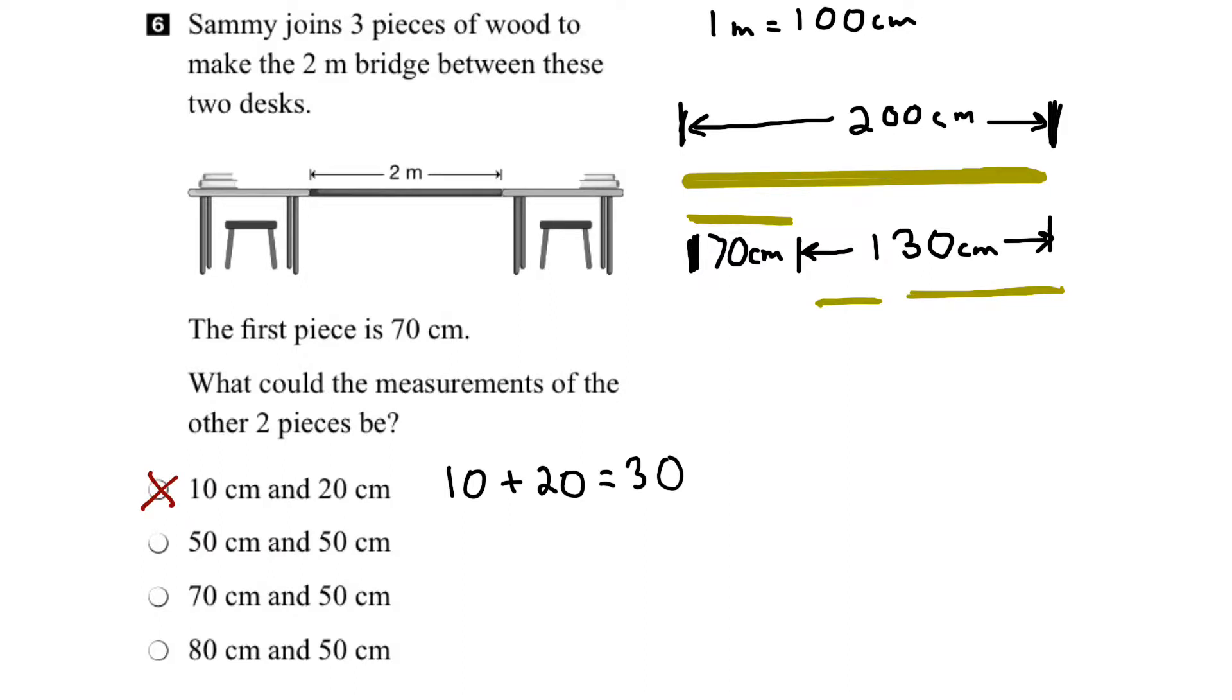Okay, let's look at the second. 50 centimeters and 50 centimeters. In this case, they'd both be the same length. Let's add those two. Well, that would give us 100 centimeters. And again, that's not our 130 that we need. So we know that this option is incorrect.